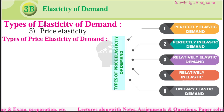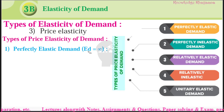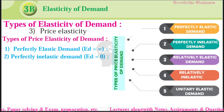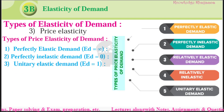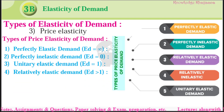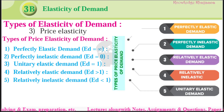There are different types of price elasticity of demand. First is perfectly elastic demand — elasticity of demand is equal to infinite. Second type is perfectly inelastic demand — elasticity of demand is equal to zero. Third is unitary elastic demand — elasticity of demand is equal to one. Fourth is relatively elastic demand — elasticity of demand is greater than one. And fifth is relatively inelastic demand — elasticity of demand is less than one.